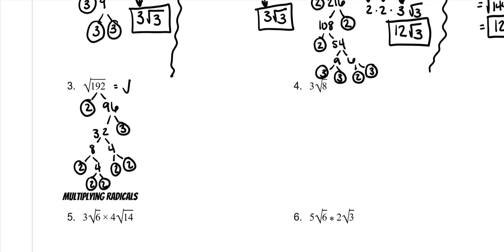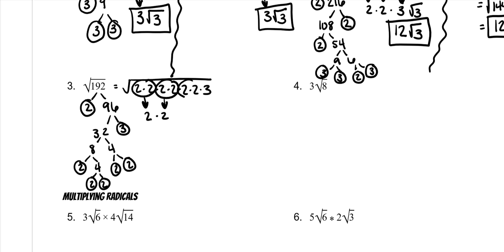So the square root of 192 is the same thing as: there are 1, 2, 3, 4, 5, 6 twos, and then a 3. All the pairs can come out, and the square root of 3 stays under. 2 times 2 is 4, times another 2 is 8 — so 8 square roots of 3.